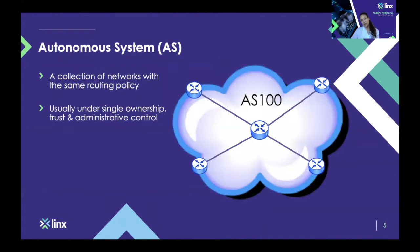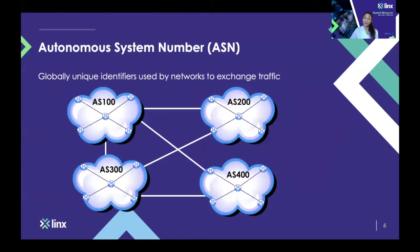A network that exchanges traffic with others on the Internet is called an autonomous system. That can be one network or a collection of networks that has the same routing policy — the same consistent way of exchanging traffic with others on the Internet. In order to do so, the network or autonomous system needs a globally unique identifier called an AS number, or autonomous system number, that it uses to identify itself on the Internet.